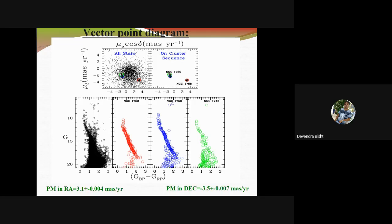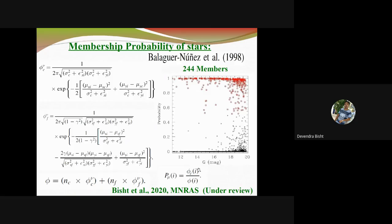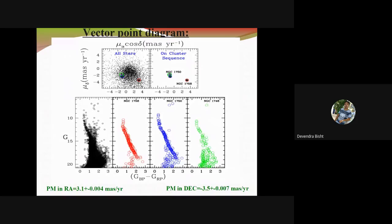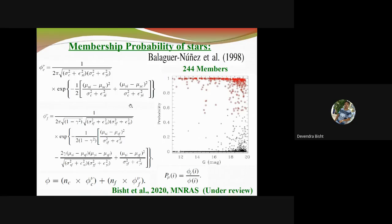We also estimated the proper motion in right ascension and declination. After selecting stars from here, we drew a circle. This circle is a compromise between losing cluster members with poor proper motion and the contamination of field stars. For that we also estimated the membership probability for individual stars.